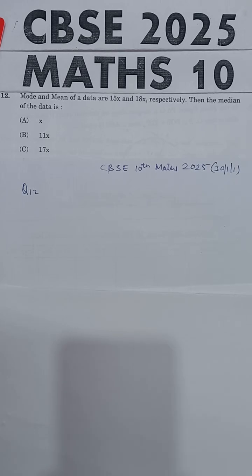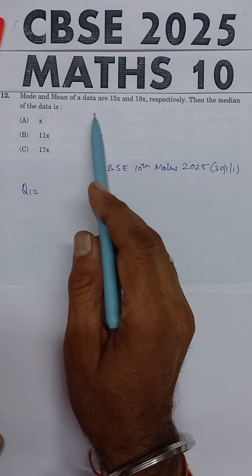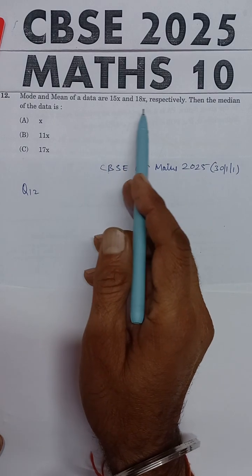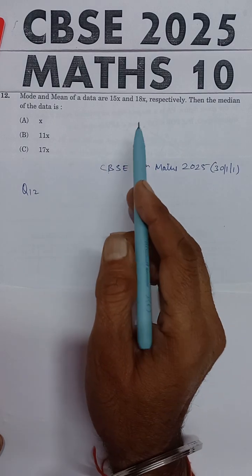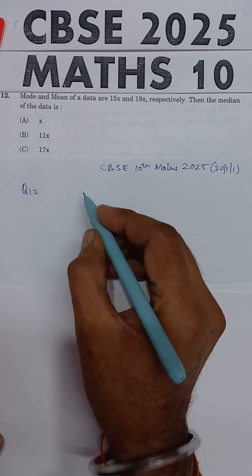This question is from the CBSE 10th Maths 2025 Examination. The problem states: the mode and mean of a data are 15x and 18x respectively. Find the median of the data.